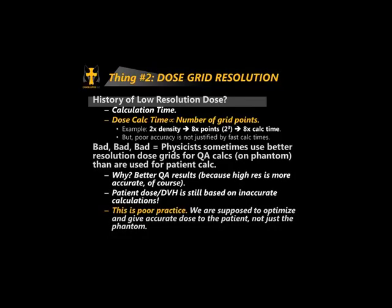A problem that exists out there: a physicist may ask you to do QA calculations at higher resolution because they get better results — because the calculation is more accurate and better matches measurement. But if you're using a higher resolution for QA calcs than for patient plans, that's completely off the rails. That means you realize you need high resolution to get it accurate — you do that for QA calcs, but if you don't do it for patient calcs, you're accepting garbage on your patient calcs. This is a very poor practice.